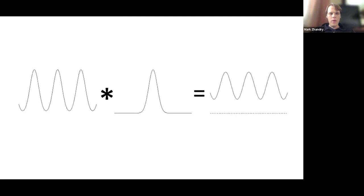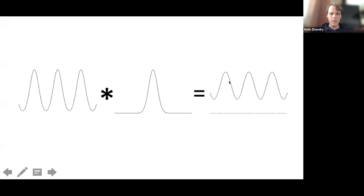But if instead of a comb I had something smoother, when I convolve with the Gaussian the tails bleed together quite significantly. Given a point on one of the humps, you can't uniquely decode — it could have come from that hump or an adjacent one. There's no way to uniquely determine the origin, so decoding fails.